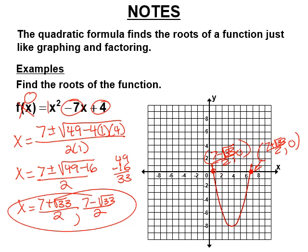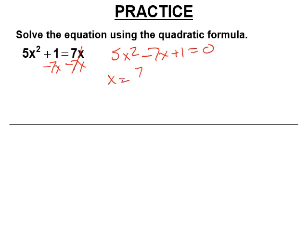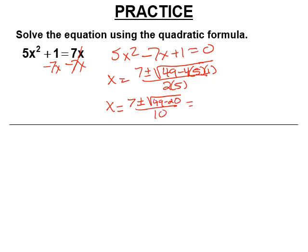Here's our practice. Remember, it has to equal 0 before you do anything else — those are the ones that will separate the A's from the B's on the test. So it's 5x squared minus 7x plus 1 equals 0. x equals negative b, which is 7, plus or minus the square root of b squared, 49, minus 4 times a, which is 5, times c, which is 1, all over 2 times 5. That gives 7 plus or minus the square root of 49 minus 20, over 10, which is 7 plus or minus the square root of 29, over 10. Done — it was an irrational answer; the solutions to the equation are irrational.